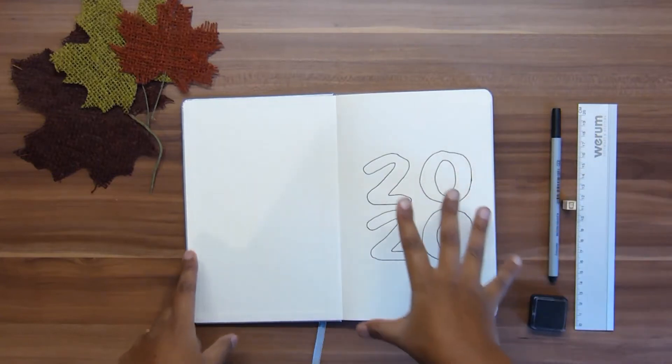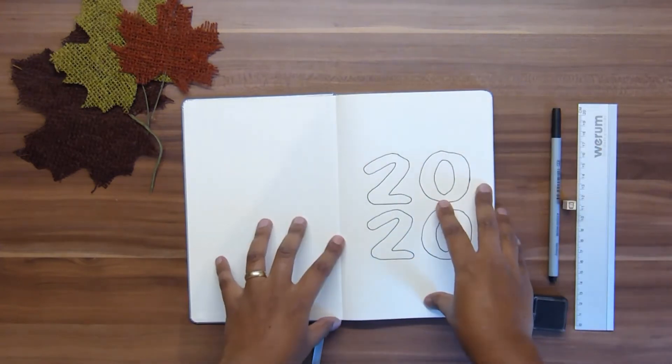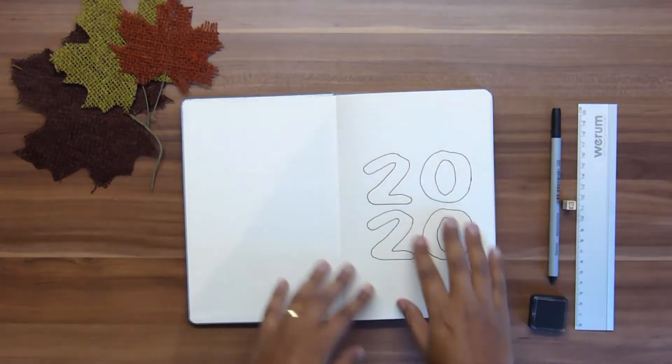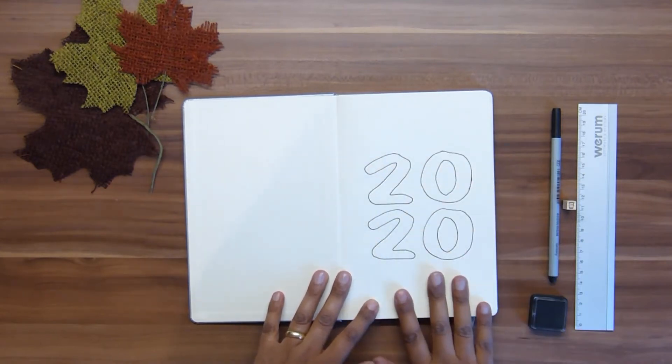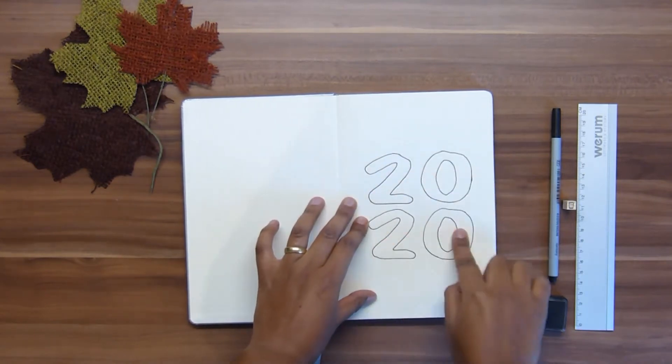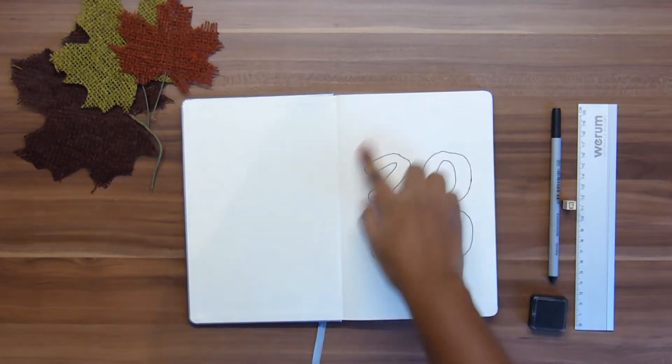I will go through the whole setup with you and then show you how I'm going to use the planner on a day-to-day basis. So I use this blank first page for the title - I just put 2020 in a very minimalistic and simple way. I can't draw, so I didn't do any doodles.